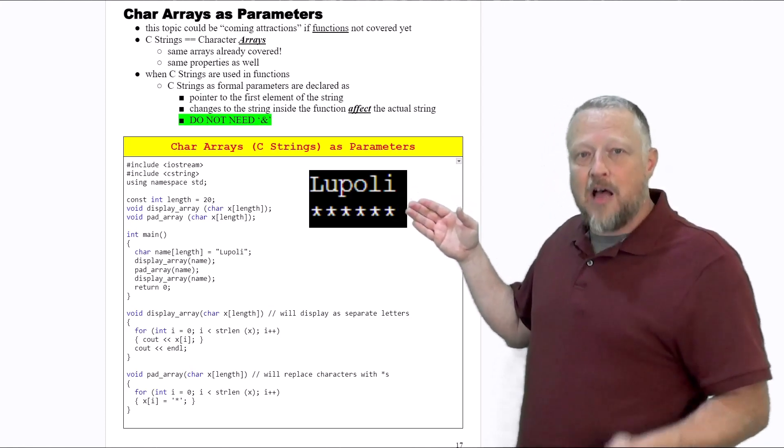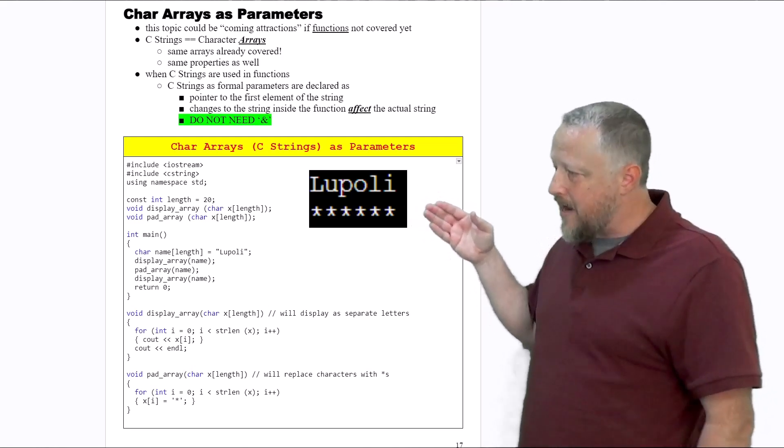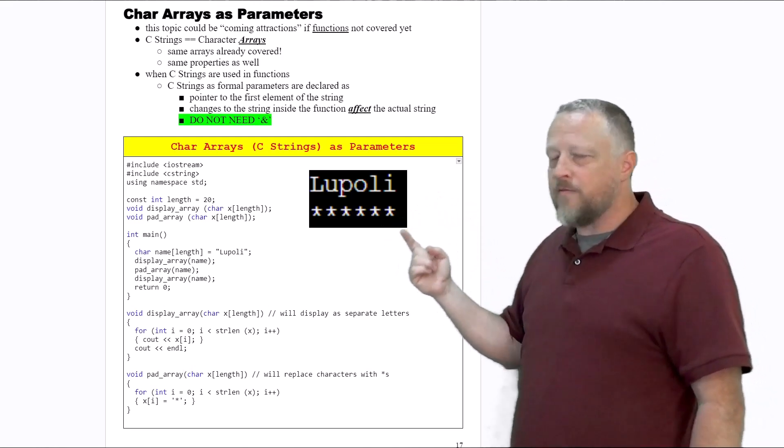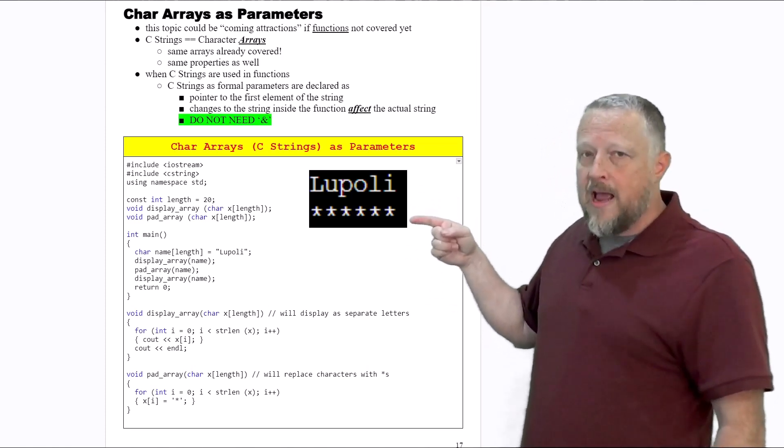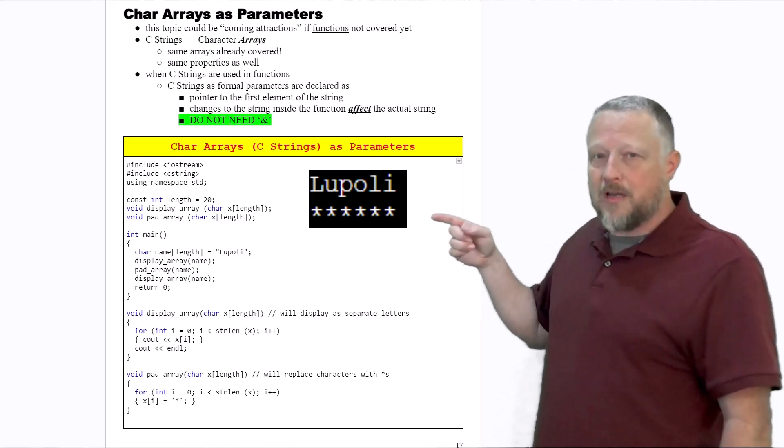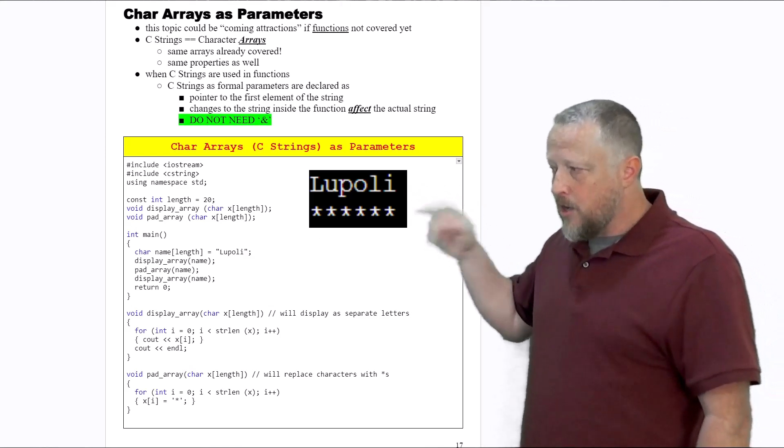It has to be able to count the length of the string inside that character array, and then it's going to loop through and replace each one of those items with a star instead. So from here on out, that string is now permanently changed from loophole to stars.